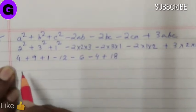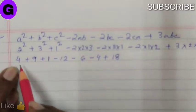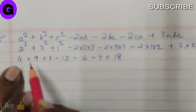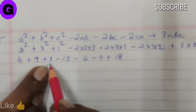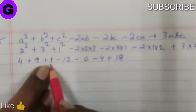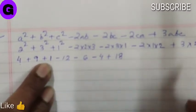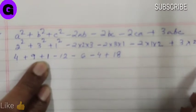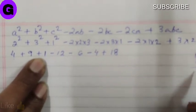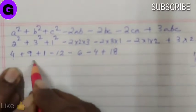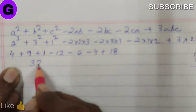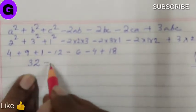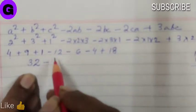So, first we will do the addition. 9 + 4 is 13, 13 + 1 is 14, 14 + 18 is 32. So 32 minus 32.